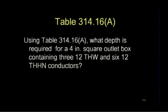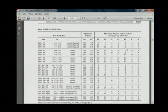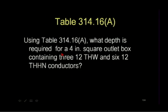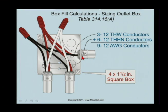Table 314.16(A). Using the table, what depth is required for a 4 inch square outlet box containing three 12 THW and six 12 THHN conductors? So that's nine 12s. It would be inch and a half deep box, right? The key here to the question... the insulation didn't matter. Exactly. It doesn't matter what insulated conductors you have. It's just simply you had 12 gauge wire. It could have been bare. We don't really care. And here's that example. Three 12s and three 12s. It's nine 12s. Table 314.16(A) would say a 4 square by 1 1/2 inch deep box would be sufficient for that.